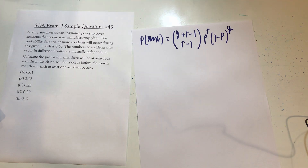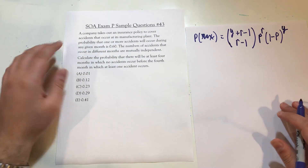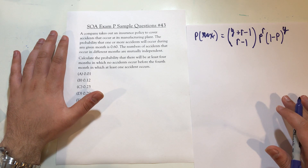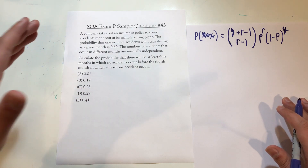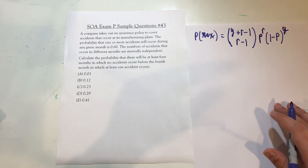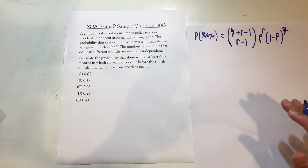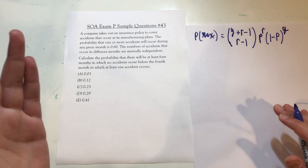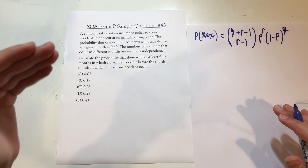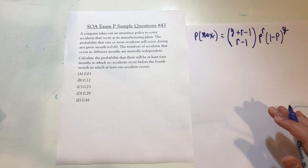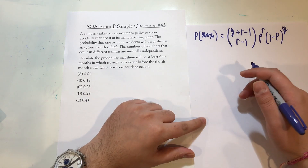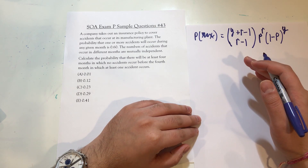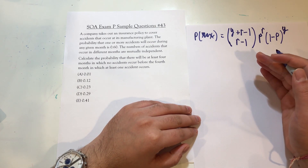There are a few cases to break this down into. We want at least four months in which no accidents occur before the fourth month in which at least one accident occurs. So we have to calculate one case for each of zero through three failure months. Let's first calculate the probability of there being zero months with no accidents before the fourth accident month occurs.